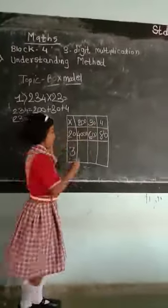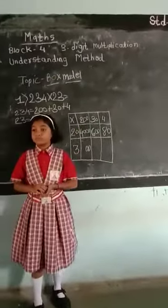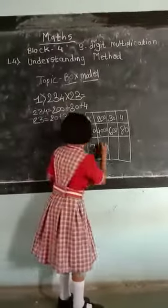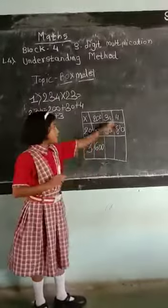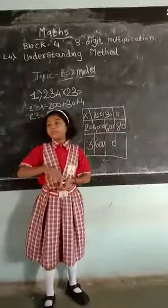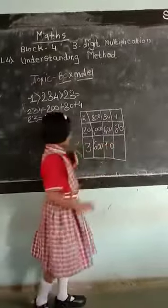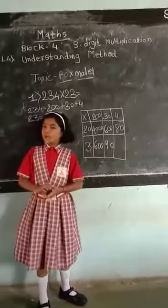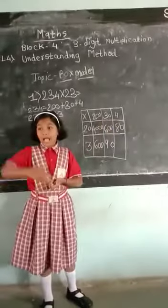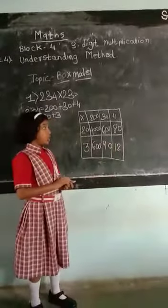There is only 1 zero. So, 3 multiplied by 2. Yes, very good. There is no zero remaining. So I write only 1 zero. So, 3 multiplied by 2. Yes, very good. Multiplication is over.